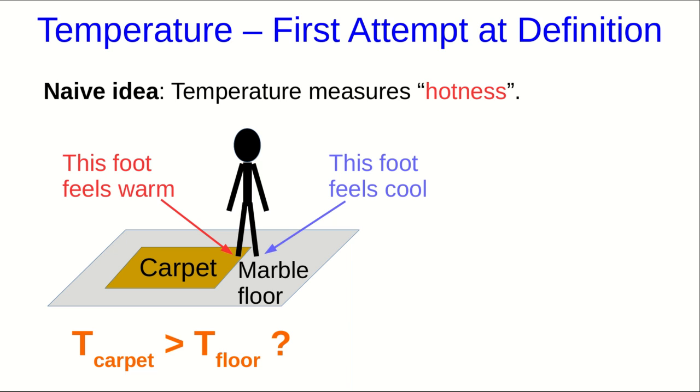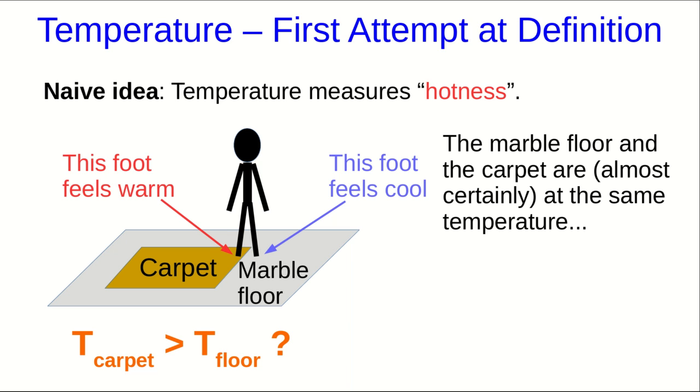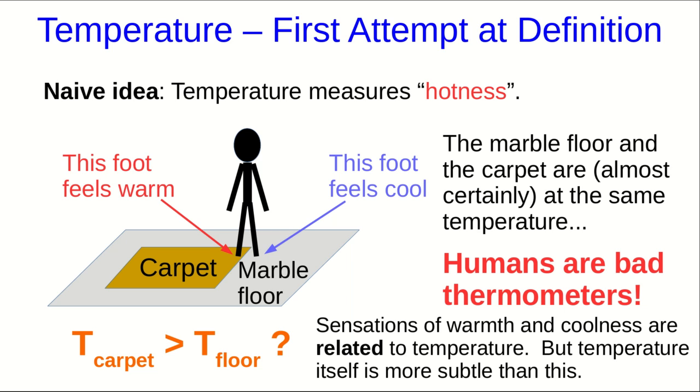It may not be obvious to you at this point, or maybe it is, but in fact the marble floor and the carpet should be at the same temperature. Don't worry if that's not obvious to you, hopefully by later on it will be. In any case, what this is showing us, first of all, is that humans are bad thermometers, but second of all, it's showing that our sensations of warmth and coolness may be related to temperature, but temperature itself must be something more subtle.